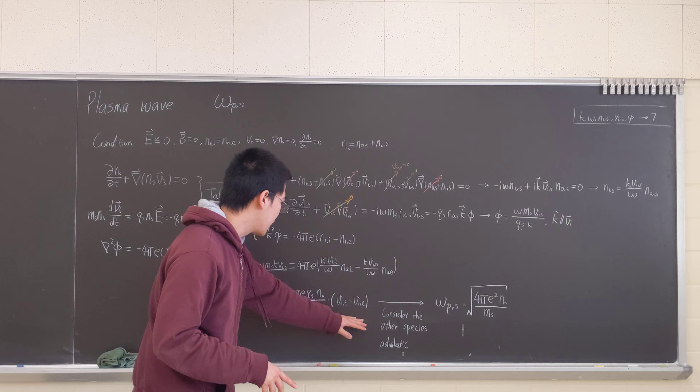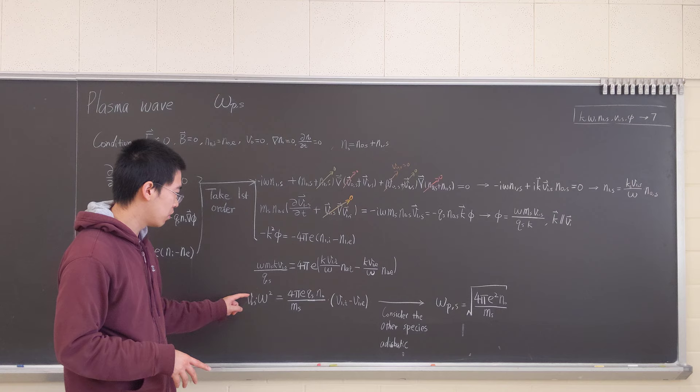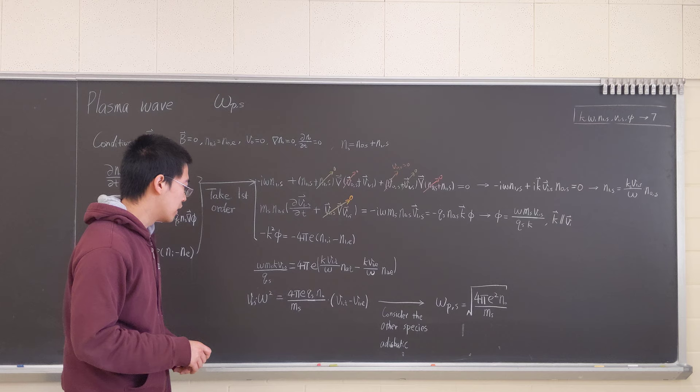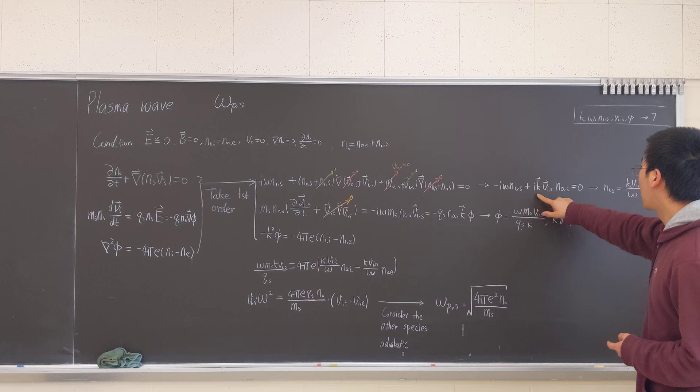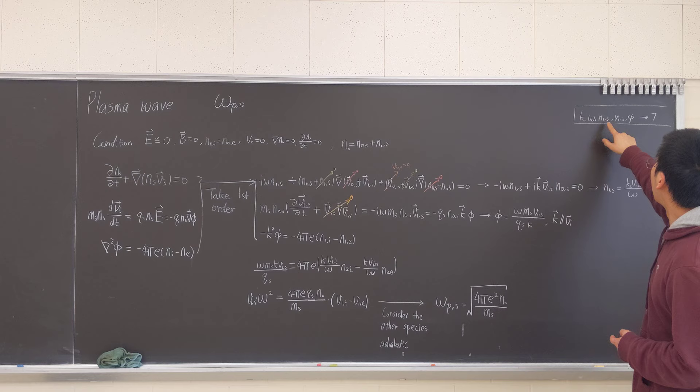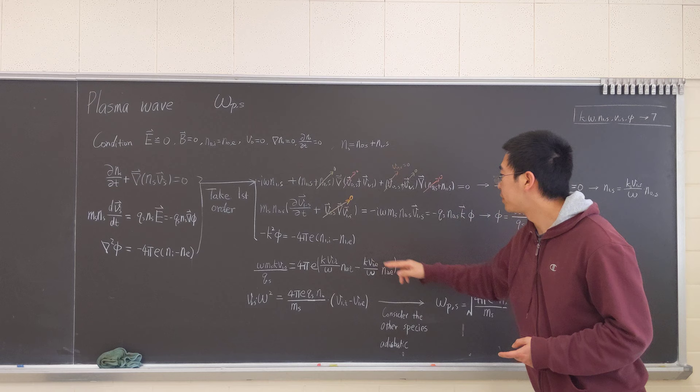So we make it look tidy like this. So V1S, this is one unknown. And it's basically not solvable. And it makes sense in a way. Because the unknown here is K omega N1 of two species, V1 of two species, and Phi.